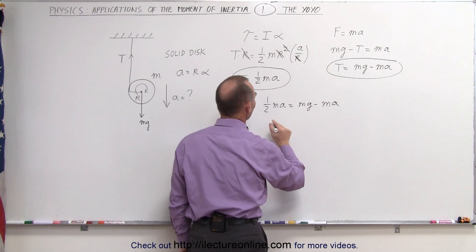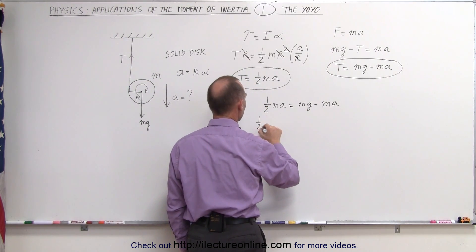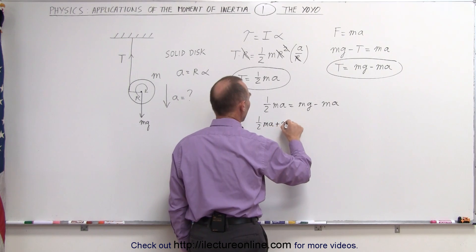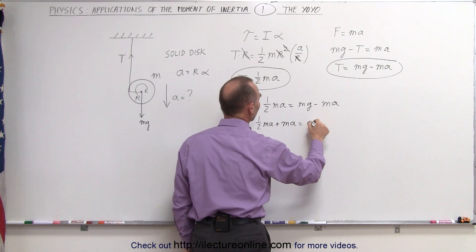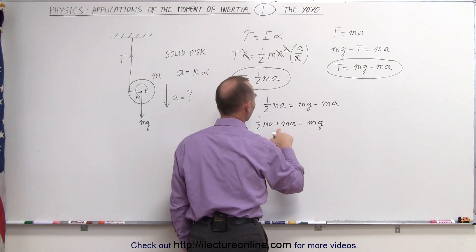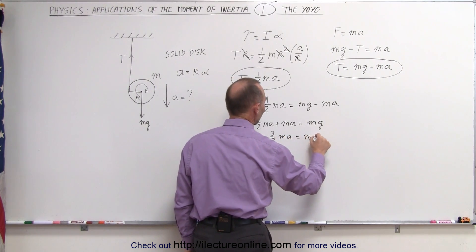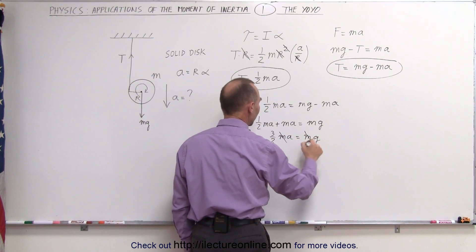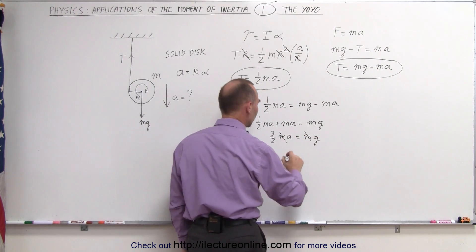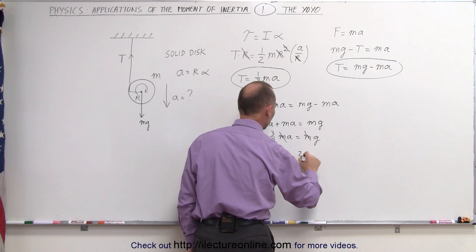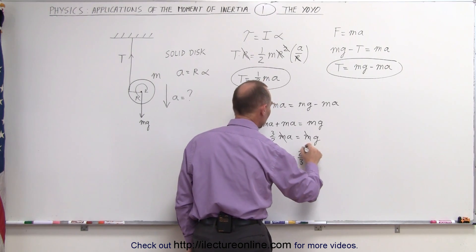Moving this term to the left side we get one half MA plus MA equals Mg. A half plus a whole that makes three halves. Three halves MA equals Mg. Notice that the M's cancel out and multiplying both sides by two thirds. I can say that A equals two thirds times acceleration due to gravity.